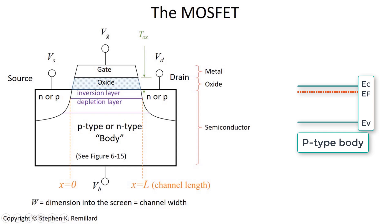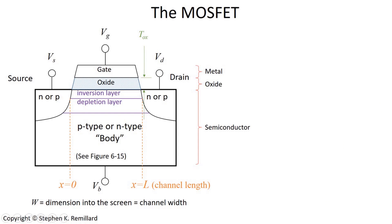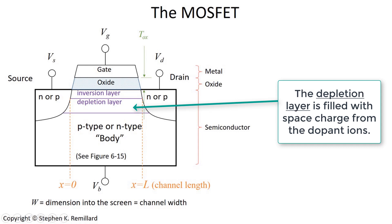This inversion layer fills up with the charge carriers of the other type. If it's P-type, it fills up with electrons; if it's N-type, the inversion layer fills up with holes. The depletion layer remains depleted of mobile charges, so the only charge in the depletion layer are the ions that are left behind after all of the free charges leave the region.